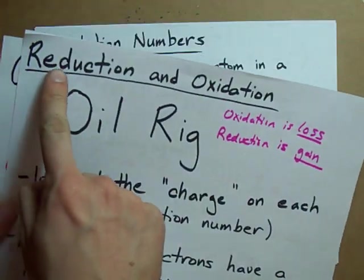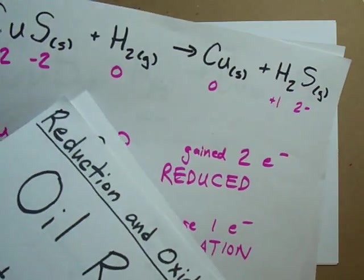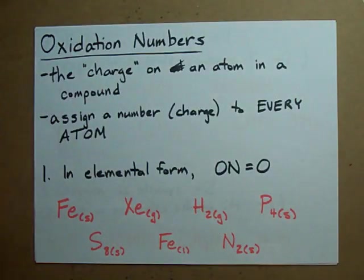If you took a look at my reduction and oxidation video, you'll remember that we assign these charges to some of the atoms. Where did those charges come from? Well, in that video I made them up. But here, I'm going to show you how we actually do them.